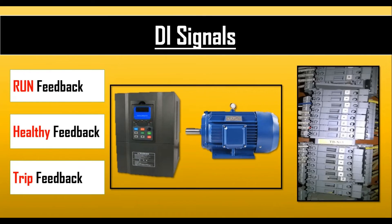Some feedback signals are DI signals, meaning digital input signals. These signals are run feedback, healthy feedback, and trip feedback. Run feedback means when the motor is on, its run feedback is received. Healthy feedback means when the motor is running in healthy mode, healthy feedback is received. Trip feedback means if the motor is tripped for any reason, its trip feedback is received.